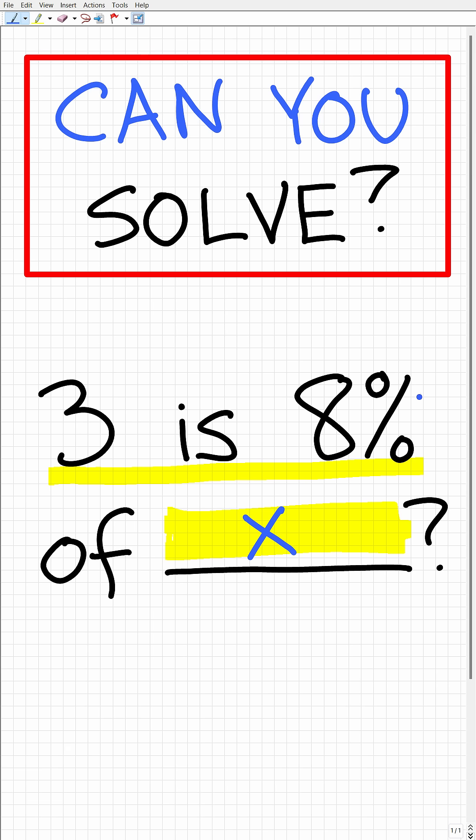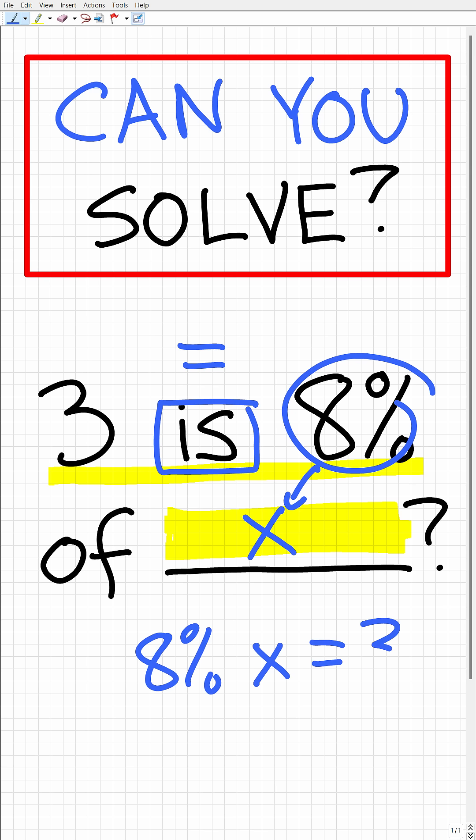If we think about it, 8% of this number—now the word 'is' in math means equal—so 8% of some number X is equal to three. We can write this out this way: 8% of this number X is equal to three.